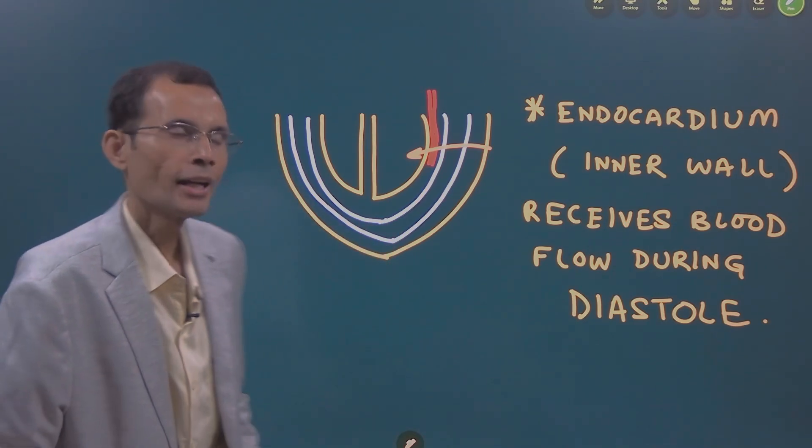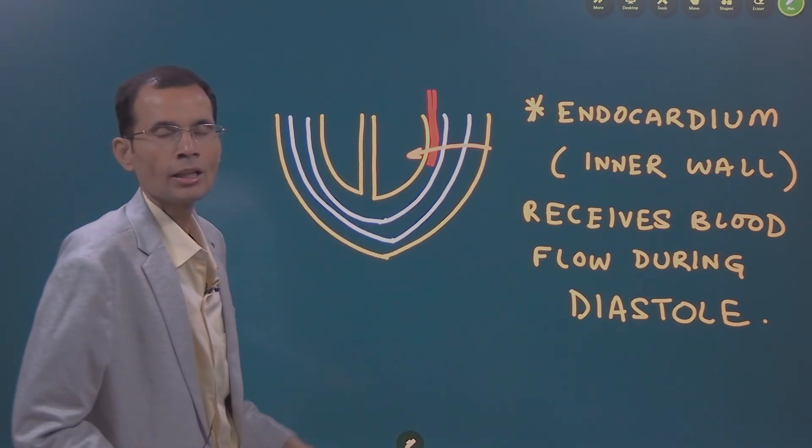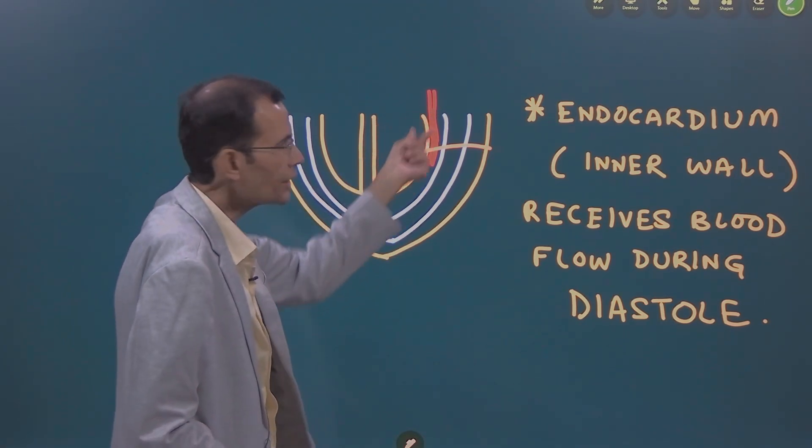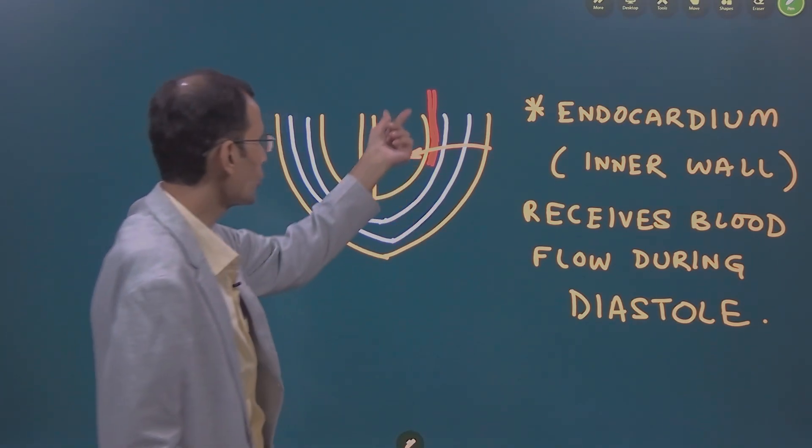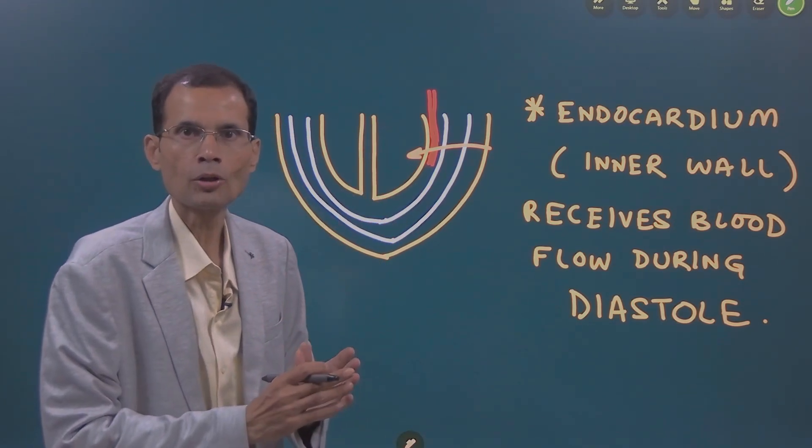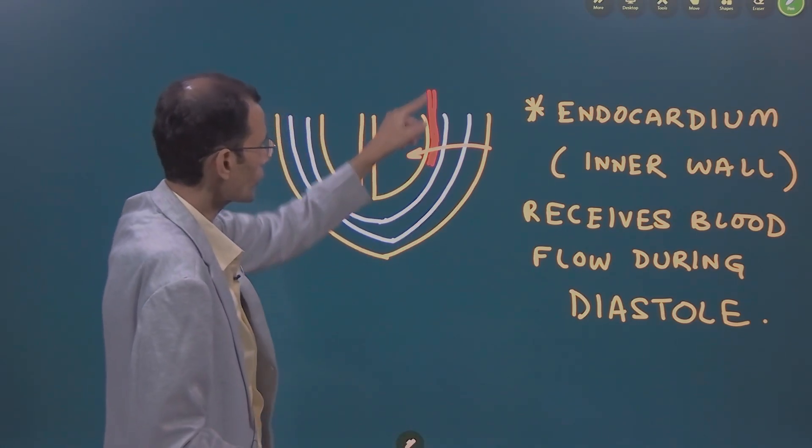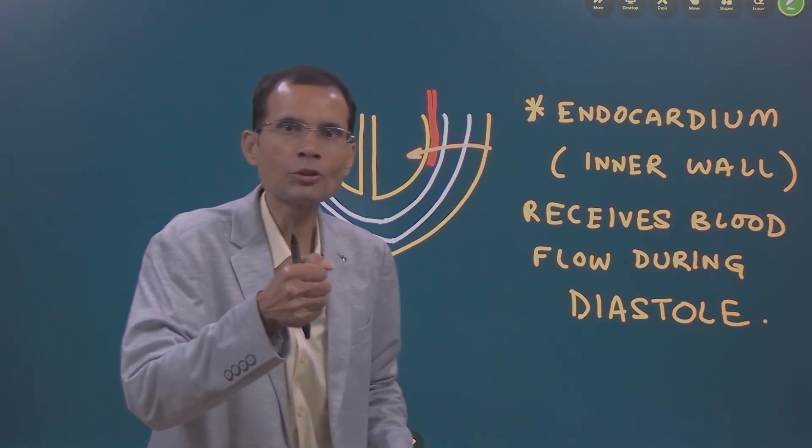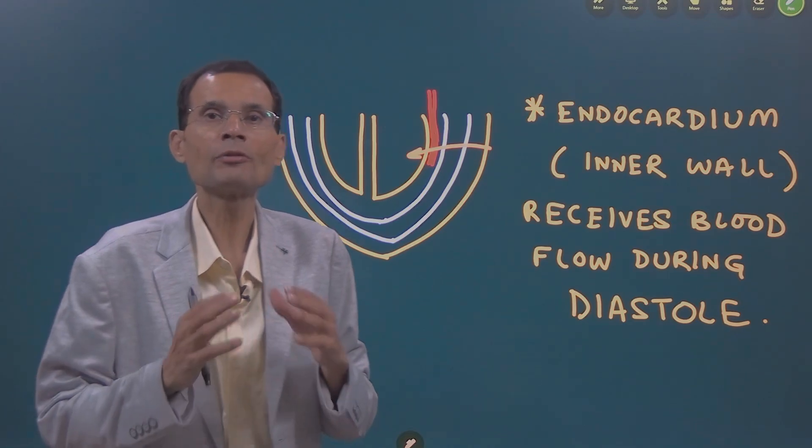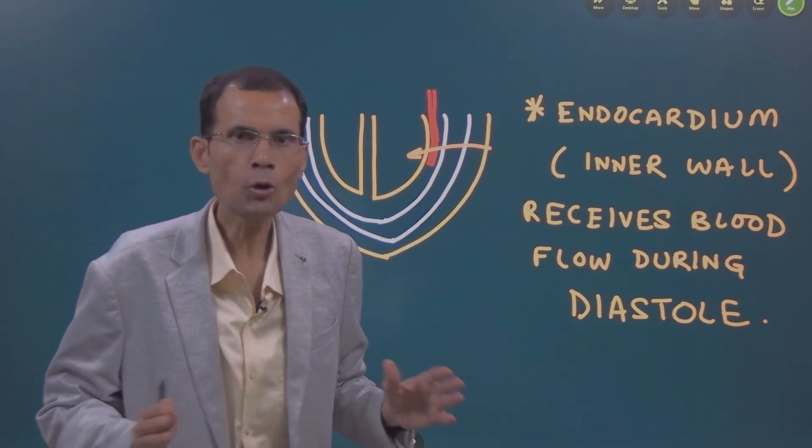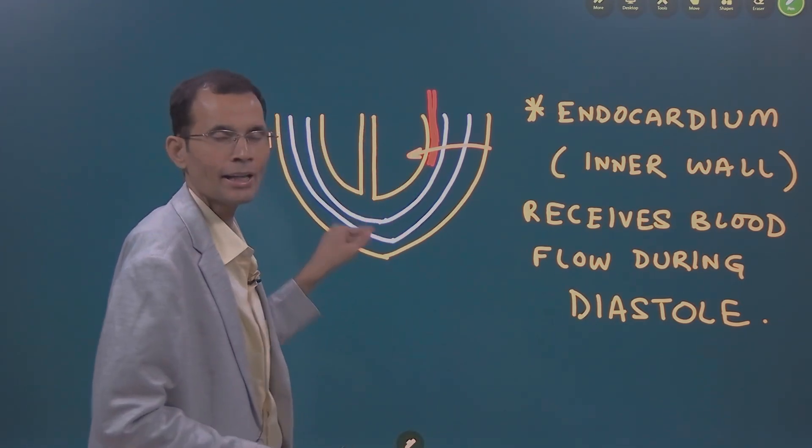It moves inward and therefore, there is a pressure on the inner wall of the heart. Endocardium and inner wall of the heart is maximally compressed and because of that, the blood vessels will be squeezed. That means, during ventricular systole, there is no blood flow in this layer of the heart.